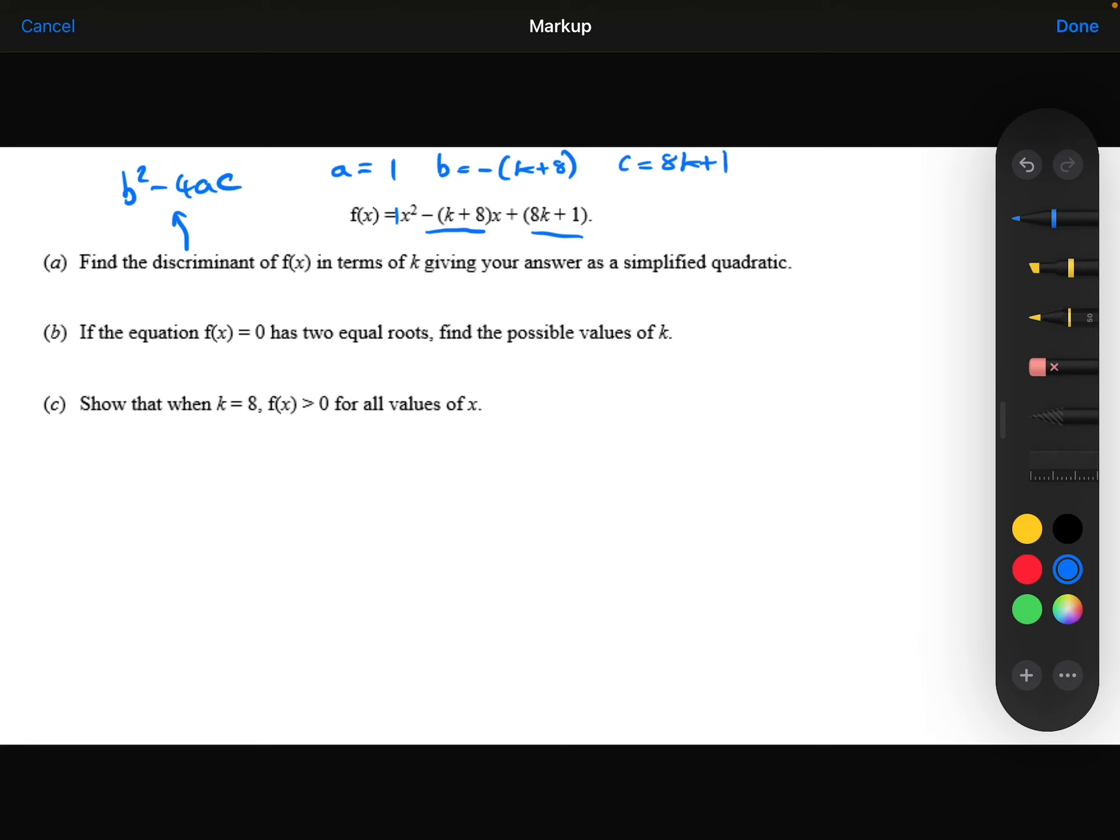Substituting those into the discriminant, we've got b squared minus 4 times a times c. Let's simplify that. The minus, when squared, becomes positive, so I don't need to worry about that.